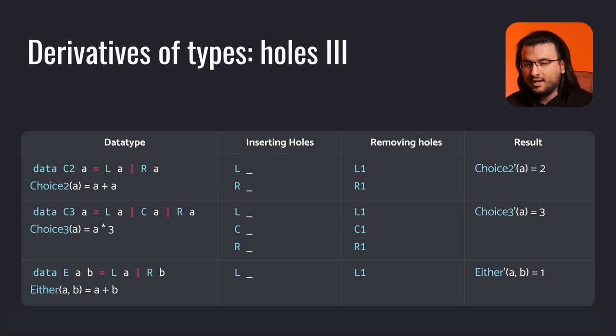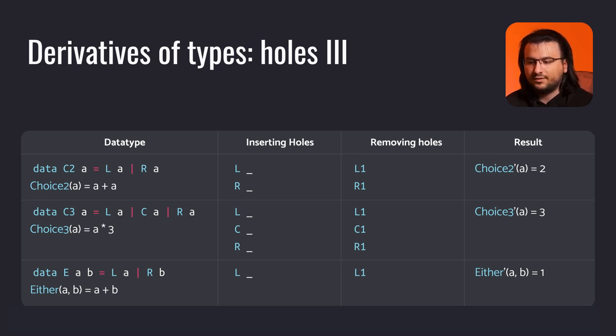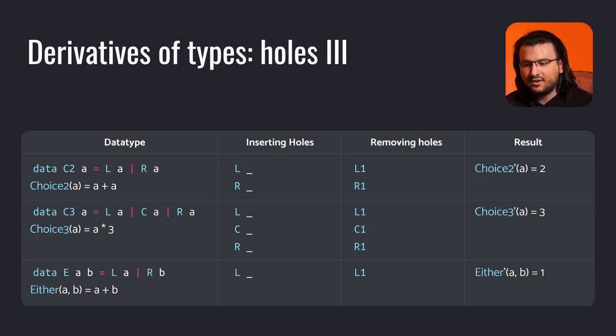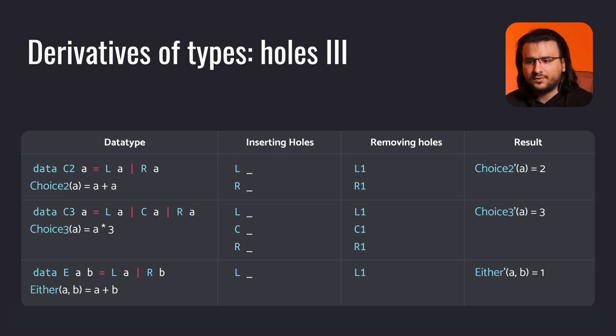Likewise for choice 3, except there's one more constructor to consider — the resulting math expression is 3. Moving on to either: the left data constructor holds a value of type a, so we insert a hole. However, right holds a value of type b and nothing else; a is nowhere present here, so we don't consider this case. In general, if a constructor doesn't accept a value of type a anywhere in its signature, we cannot place any holes and the entire constructor is skipped. In the end, we get a math expression of 1.